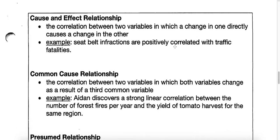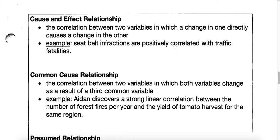Looking at the different types of relationships: what we really want is to find a cause and effect relationship — the correlation between two variables in which a change in one directly causes a change in the other. For example, seat belt infractions: the more seat belt infractions, that's going to cause more traffic fatalities. There is a real direct relationship between seat belt use and traffic fatalities.